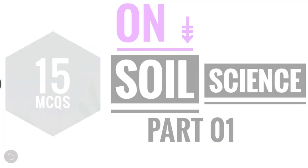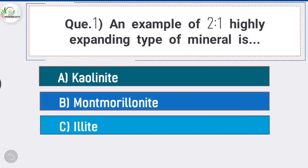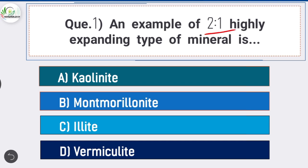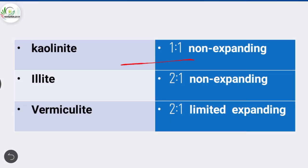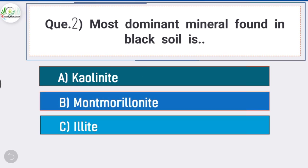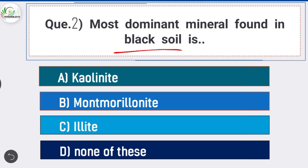Question number one: an example of 2:1 highly expanding type of mineral is — answer is option B, montmorillonite. Kaolinite is an example of 1:1 non-expanding mineral. Illite is an example of 2:1 non-expanding mineral, and vermiculite is an example of 2:1 limited expanding mineral.